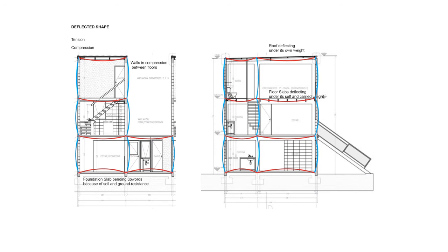The deflection shape of the structure will look like this. All the floors except the ground slab will bend downwards, while the ground slab will be pushed up. The walls in compression will bend outwards, being pushed and compressed by the floor load.